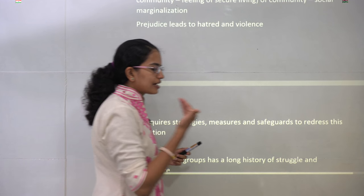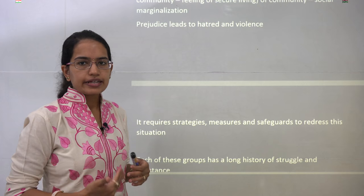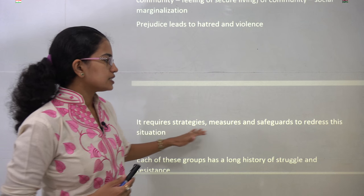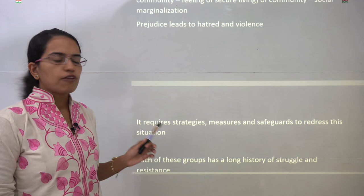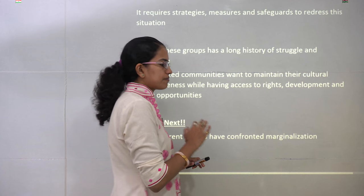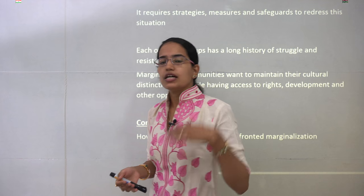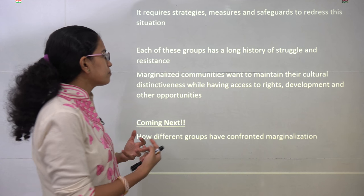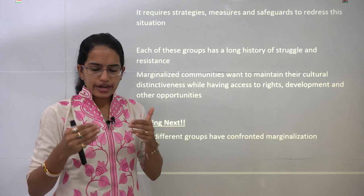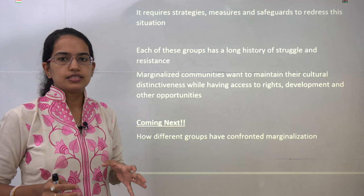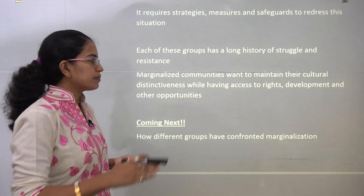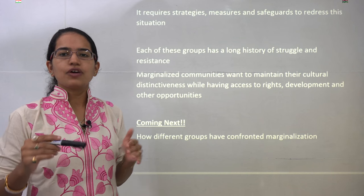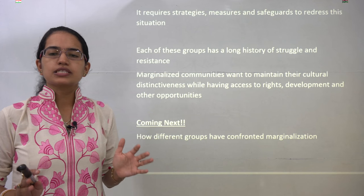Various prejudices and stereotypes have led to hatred, which is one of the major issues to address in today's society. We require various strategies, measures, and safeguards to address the issue of marginalization. Both groups we have discussed — and others — have a long history of struggle and resistance. This marginalization keeps them wanting to create their own distinct culture and not lose their traditions and customs, while the government and constitution aim to safeguard their rights and help them integrate with the mainstream.